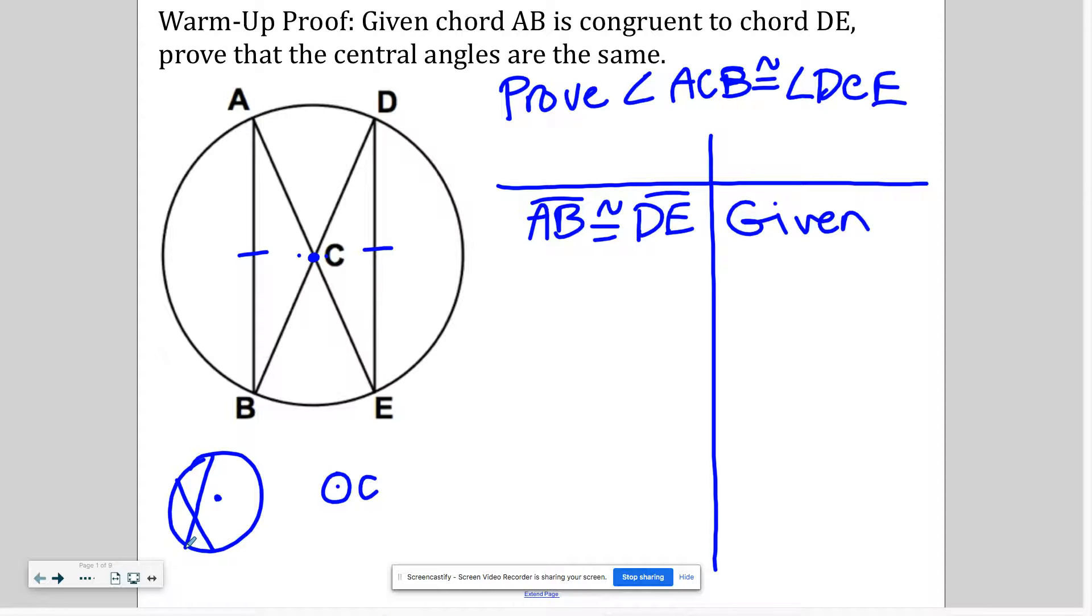For example, the next thing I'm going to do here is say that AC is congruent to DC, which is congruent to BC, and also CE. Why?